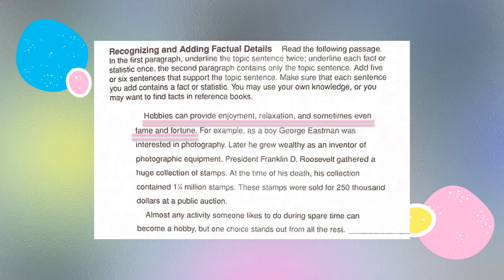Now we need to underline the facts. Let's look at the second sentence: "For example, as a boy, George Eastman was interested in photography." This is a sentence you could consider a fact; however, it's a little harder to prove unless you have the writings or opinion of George Eastman himself — unless he tells you he was interested in photography as a boy. So it's up to you whether you choose to say it is a fact. "Later, he grew wealthy as an inventor of photographic equipment" — yes, this is definitely a fact because you can look up who invented photographic equipment and find George Eastman's name there.